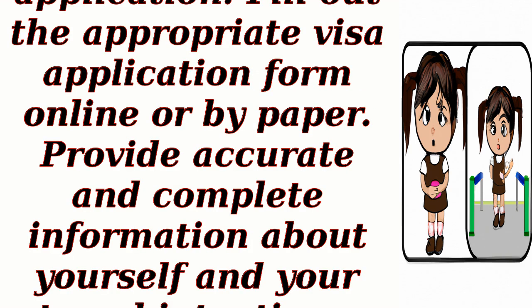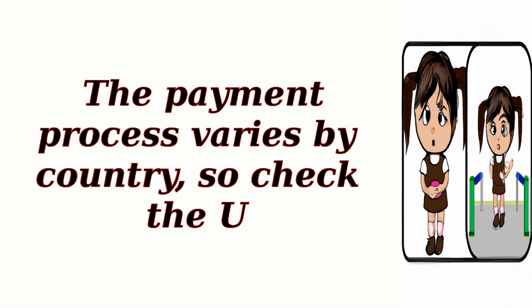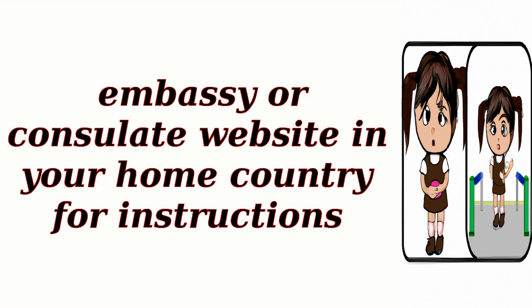To complete the visa application, fill out the appropriate visa application form online or by paper. Provide accurate and complete information about yourself and your travel intentions. Pay the visa application fee — each visa category has a specific fee that must be paid. The payment process varies by country, so check the U.S. Embassy or consulate website in your home country for instructions.